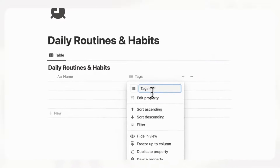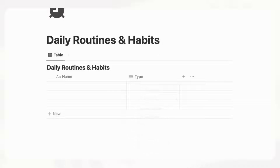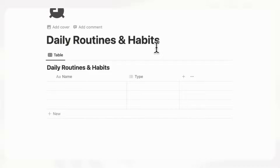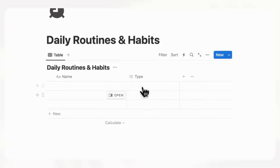Here we have tags, but instead of tags we're going to rename this to "type." When we think about daily routines and habits, we often have different habits depending on the time of day. So we're going to make three types: morning, afternoon, and evening. Of course, you're welcome to customize this however you want to categorize your routines and habits.